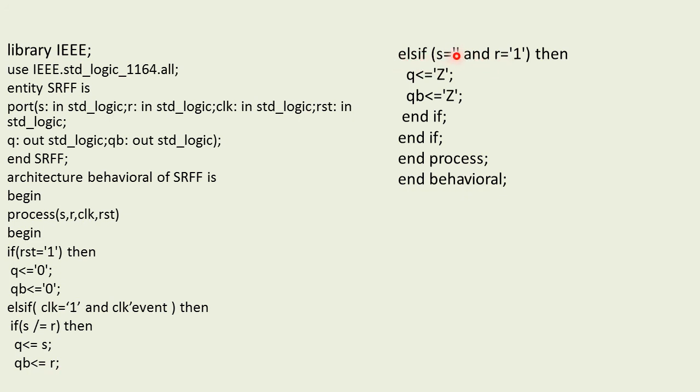Else if we have the last condition: S equals 1 and R equals 1. When both inputs are 11, then the output is going to be undefined. So we write Q as Z and QB as Z. Z is the unknown term we defined in attributes. This is the undefined or race around condition.